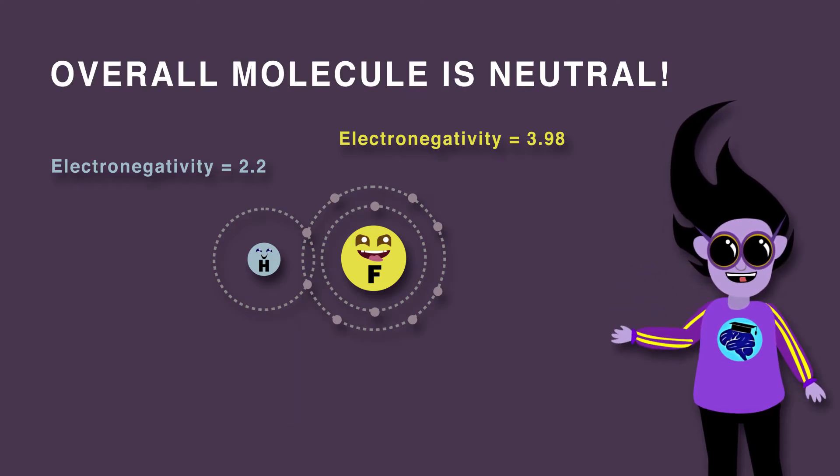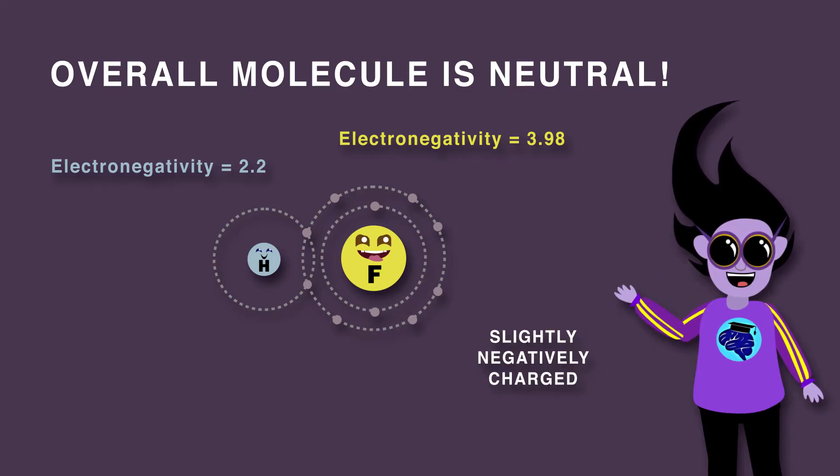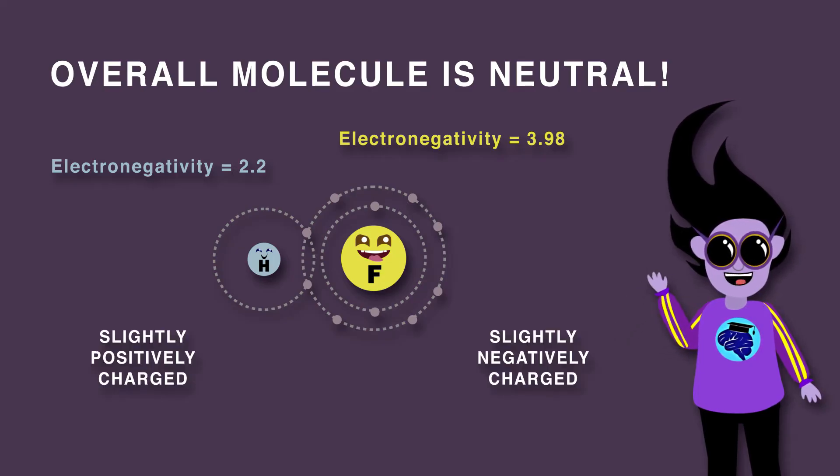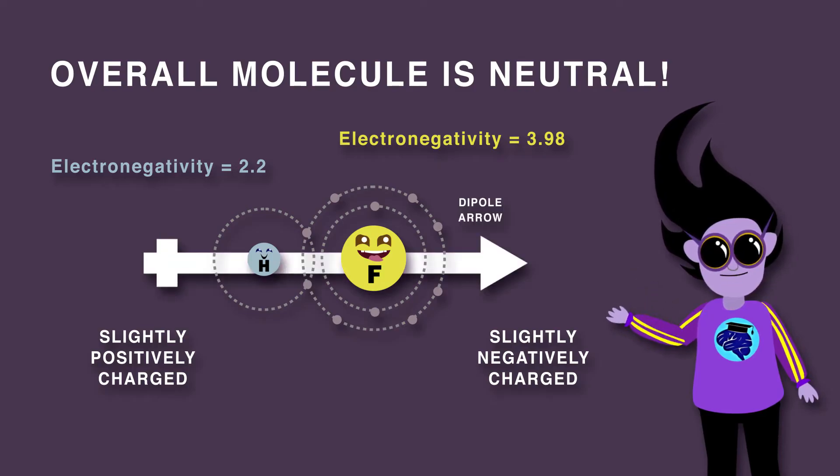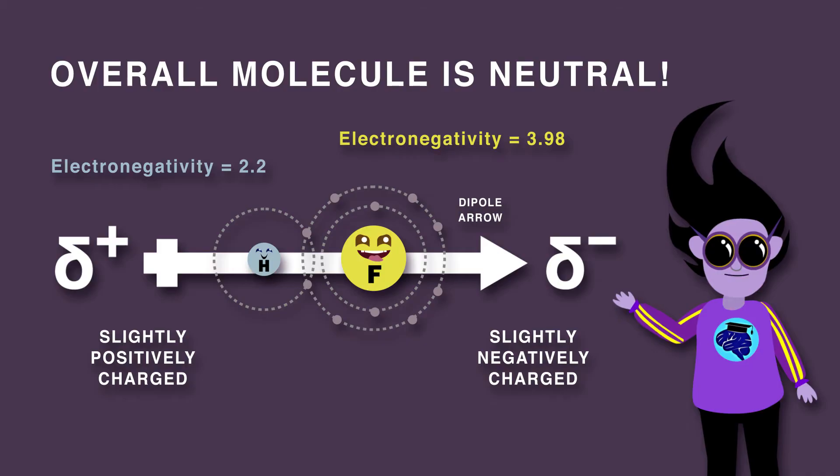So although the overall molecule is neutral, this results in one end of the molecule being slightly negatively charged and the other slightly positively charged. This charge distribution is denoted by a dipole arrow and a lowercase delta with a charge superscript.